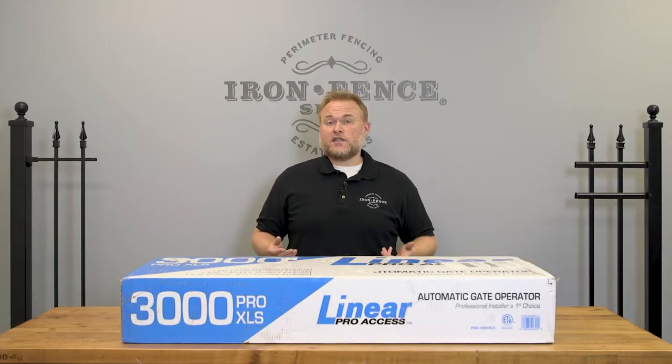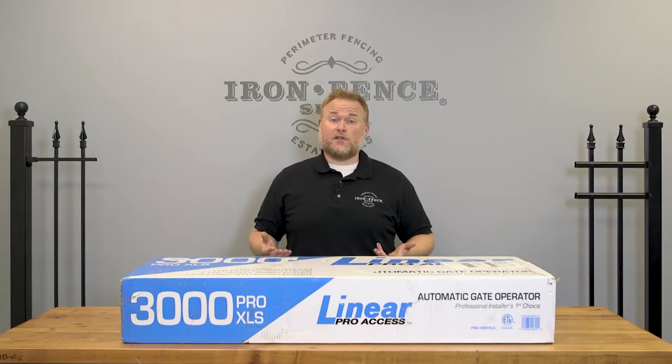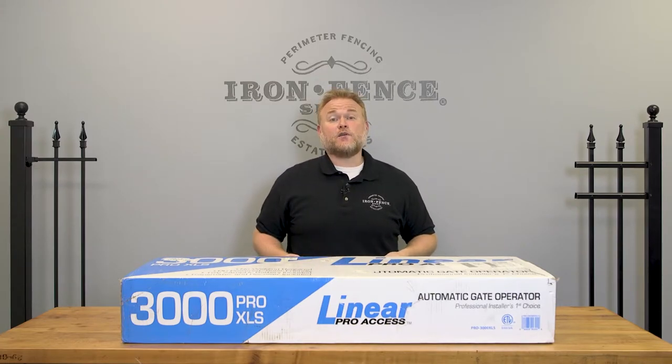The Linear Pro 3000 and 3200 kits are rated to handle up to a 16-foot wide and 650-pound gate leaf. Now that's way wider and way heavier than any of our standard gates that we have. Now let's crack open this box and see what's inside.